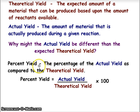From that, we can figure out the percent yield. The percent yield is actually a comparison of the actual yield to the theoretical yield. So percent yield is actual yield divided by the theoretical yield multiplied by 100 percent.